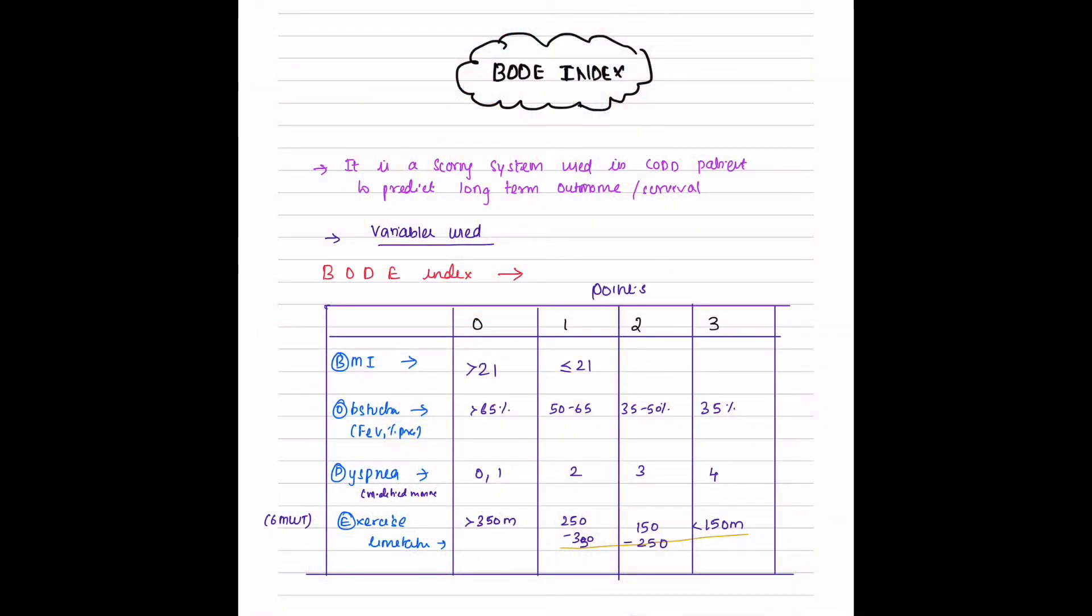Let's learn about BODE index today. BODE index is a multi-dimensional scoring system and capacity index which is used to test patients who have been diagnosed with chronic obstructive pulmonary disease, and it is used to predict the long-term outcomes for them.